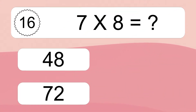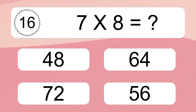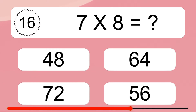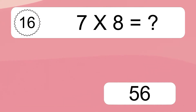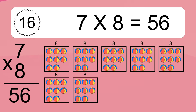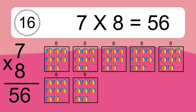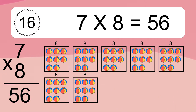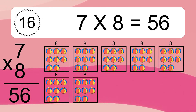7 times 8 equals what? 7 times 8 equals 56. We have 7 boxes and each box has 8 colorful balls inside. If you count all the balls in all the boxes together, you will have 7 times 8 balls. This equals 56 balls.